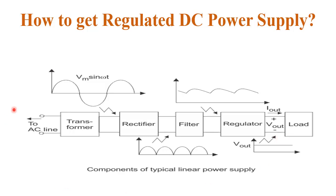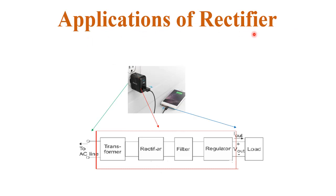With the help of all these components, we convert AC into regulated DC power supply. Now, the applications of the rectifier: rectifiers have many applications in domestic and industrial settings where we need to convert AC into DC. The most important and frequently used application in daily life is mobile charging. In mobile charging, the charger is directly connected to the AC mains supply and the output is connected to the mobile where the battery is charged. This charger is basically an AC adapter, which consists of a transformer, rectifier, filter, and regulator.